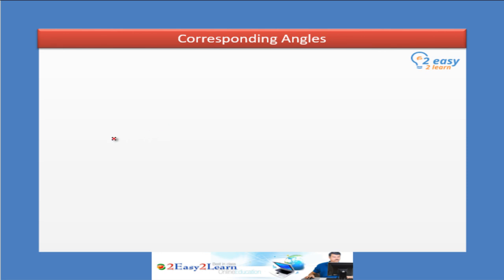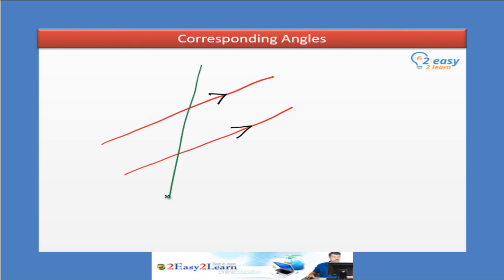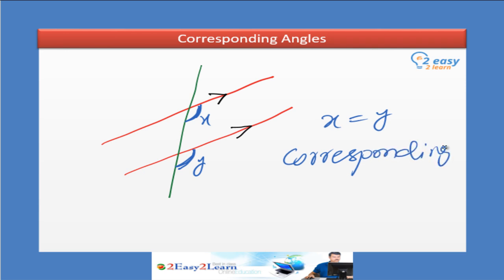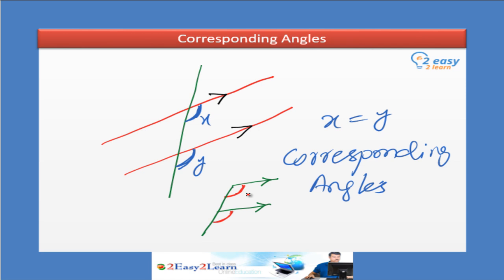Corresponding angles. Let's draw two parallel lines with a transversal. This angle inside and this angle outside: X is equal to Y, and we call it corresponding angles. Think of it like an F shape — keep that in mind. The condition is these two lines are parallel, and one angle is inside while the other is outside. These two angles are equal and we call them corresponding angles.